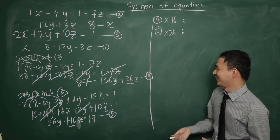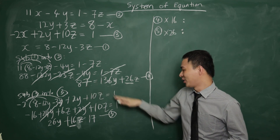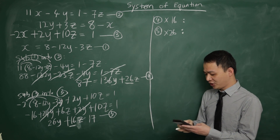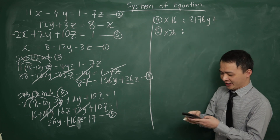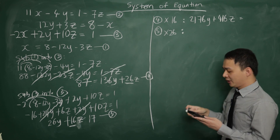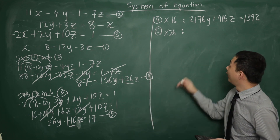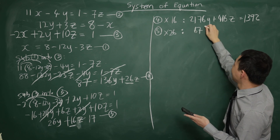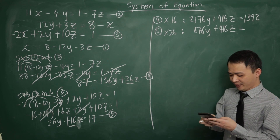Using the calculator: equation 4 multiplied by 16 gives 2176y plus 416z equals 1392. This is equation 6. Equation 5 multiplied by 26 gives 676y plus 416z equals 442. This is equation 7. Both equations now have the same coefficient of z, so I can eliminate z by subtracting one from the other.